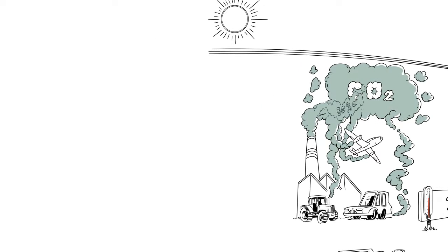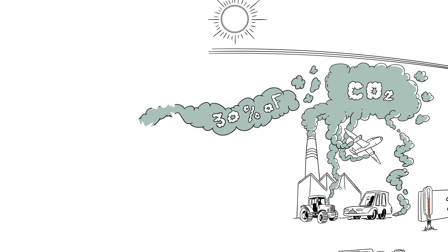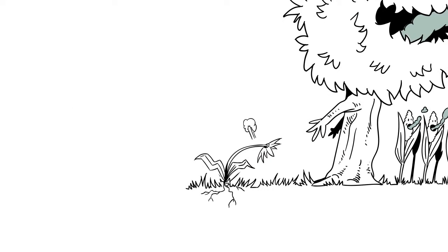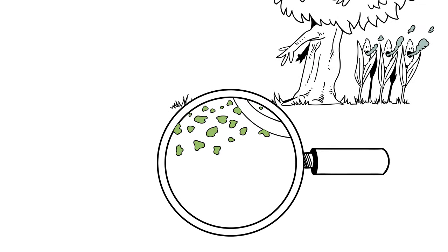Every year, plants recover 30% of CO2 thanks to their process of photosynthesis. Later, when the plants die and decompose, living organisms in the soil such as bacteria, fungi and earthworms transform them into organic matter.